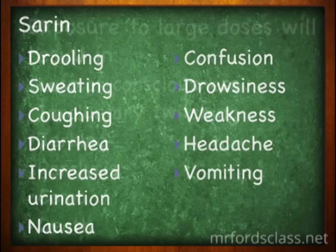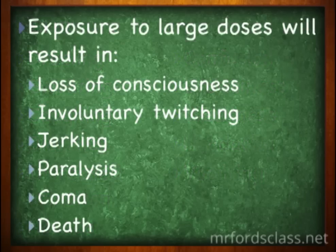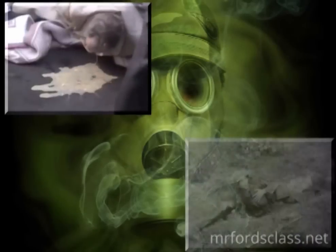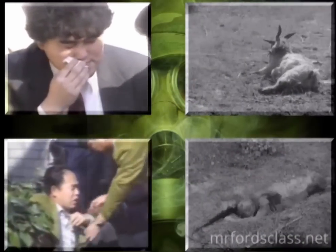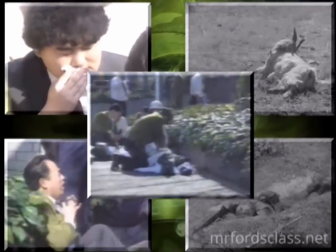Extremely large doses of sarin will result in loss of consciousness, involuntary twitching, jerking, paralysis, coma, and eventually death.